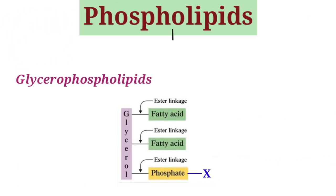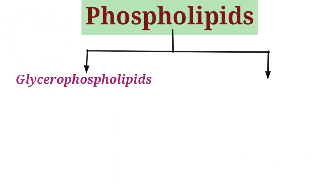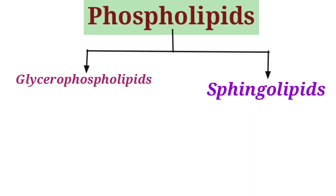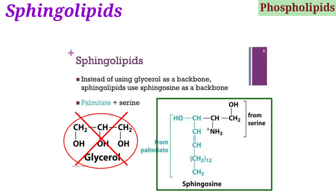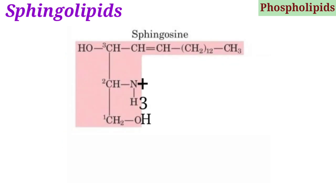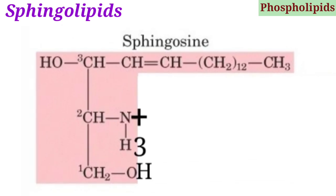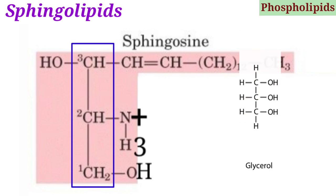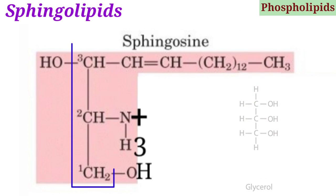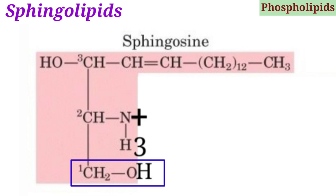Now let's move to the other type of phospholipid — sphingolipids. Here glycerol is not visible in the structure; instead, sphingosine is present. What is sphingosine? The structure of sphingosine shows three carbons in the backbone, numbered 1, 2, and 3, but they differ from glycerol. Carbon 1 shows the presence of a hydroxyl group and carbon 2 shows the presence of an NH3+ group.